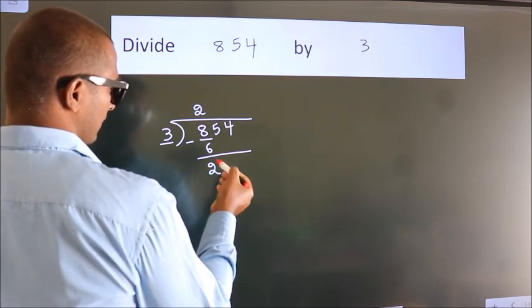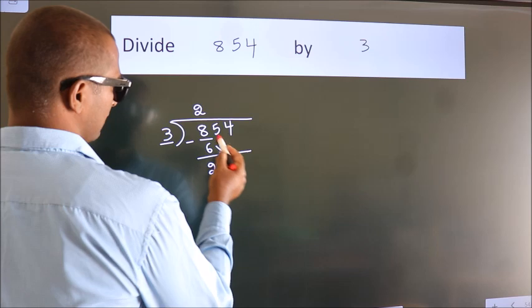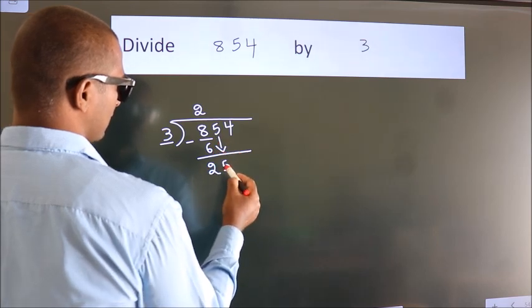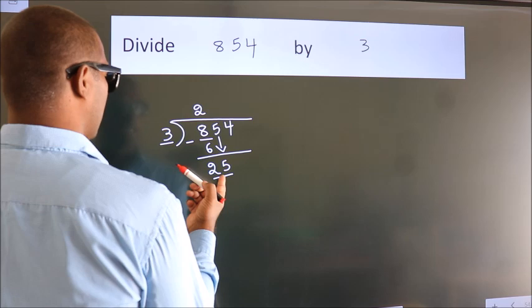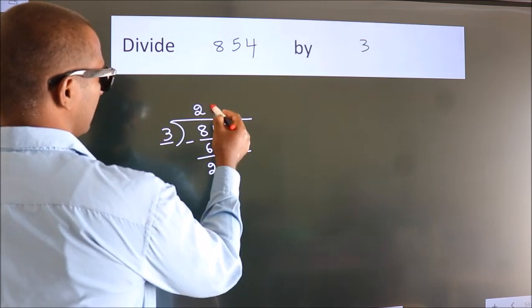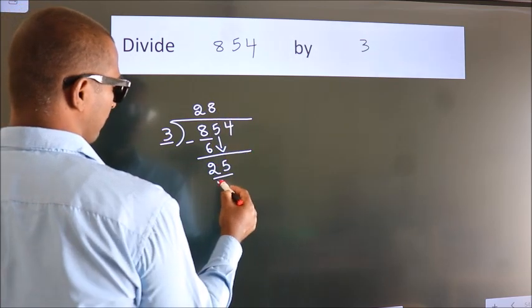After this, bring down the beside number. So 5 down, giving us 25. A number close to 25 in 3 table is 3 times 8, which is 24.